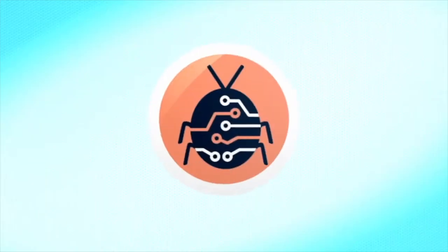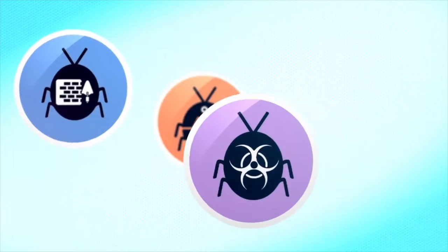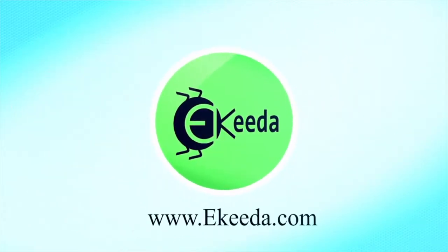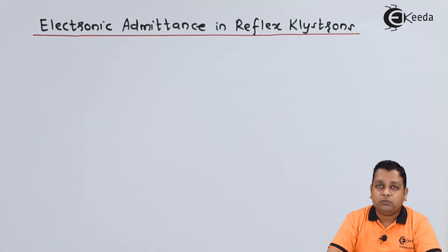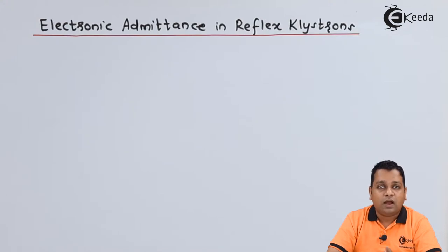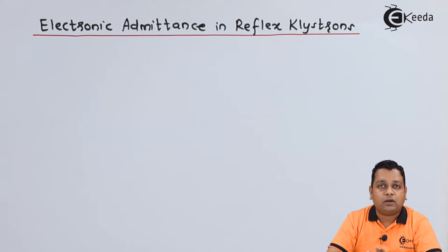In the previous two videos we understood the working operation. Velocity modulation is again the principle of operation. With the help of the Applegate diagram, the bunching process — the electron bunches are formed as the electrons are repelled by the repeller electrode, and they give up their energy to the grids of the resonant cavity (anode cavity) at the retarding phase. For this reflex klystron, the current produced by these electron bunches can be written in phasor form.